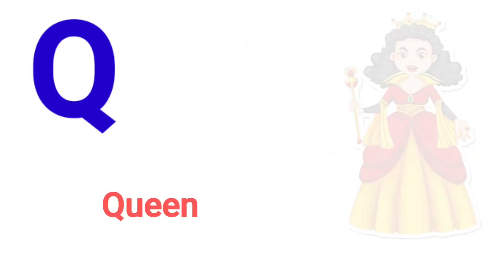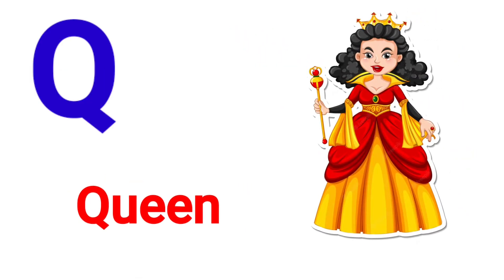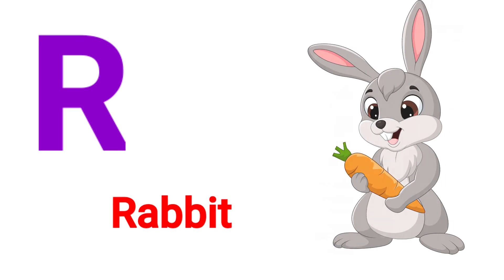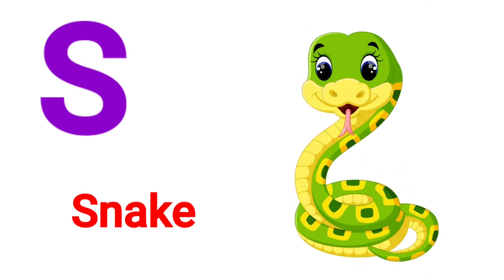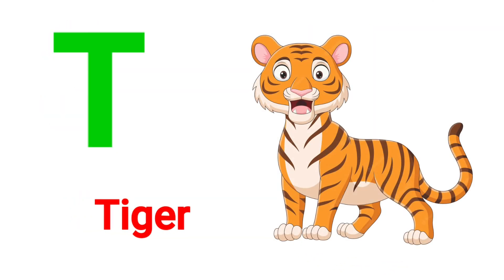P for parrot, Q for queen, R for rabbit, S for snake, T for tiger, U for umbrella.